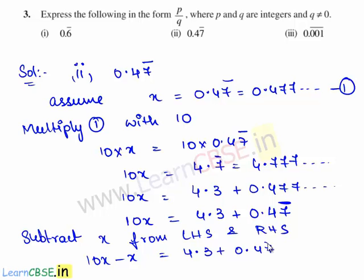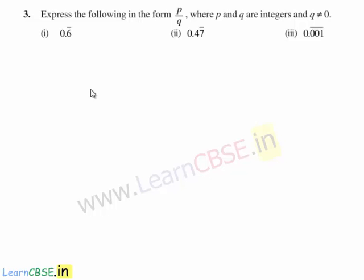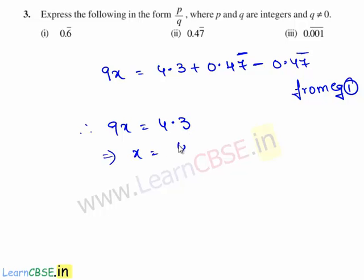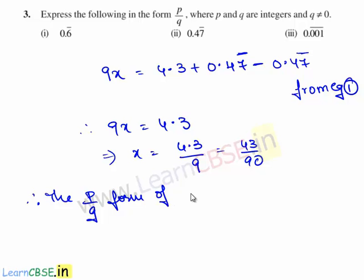From the obtained equation we shall subtract x from both LHS and RHS. So 10x minus x is equal to 4.3 plus 0.47 bar minus x. We have 10x minus x is equal to 9x, which gives 9x equal to 4.3, which is 43 by 90. Therefore the p by q form of the given decimal expansion 0.47 bar is 43 by 90, where p and q are integers and q is not equal to zero.